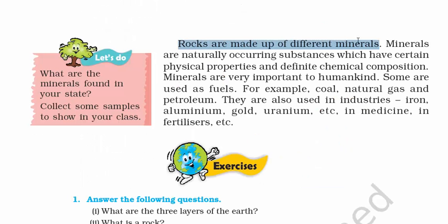Rocks are made up of different minerals. Minerals are naturally occurring substances which have certain physical properties and chemical composition. Minerals are very important to humankind. Some are used as fuels — for example, coal, natural gas, and petroleum. They are also used in industries: iron, aluminium, gold, uranium, etc.